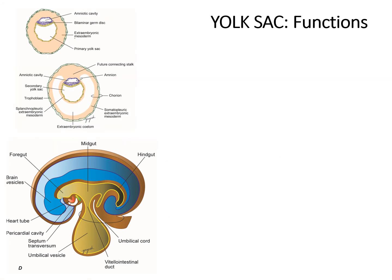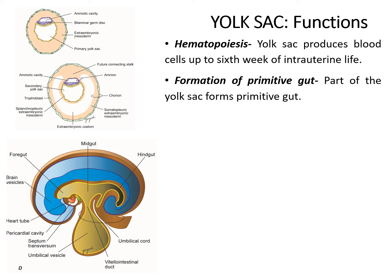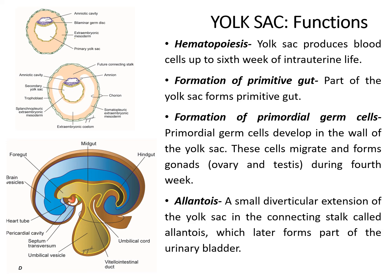The functions of the yolk sac are mainly hemopoiesis — it produces blood cells up to the 6th week of intrauterine life. It also helps in formation of the primitive gut. The primordial germ cells, which develop in the wall of the yolk sac, migrate during the 4th week to form the gonads, i.e., the ovary and testes. It also forms a small diverticulum extending into the connecting stalk called the allantoic diverticulum or allantois, which later forms the urinary bladder.